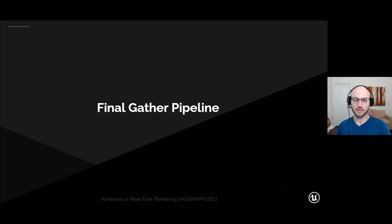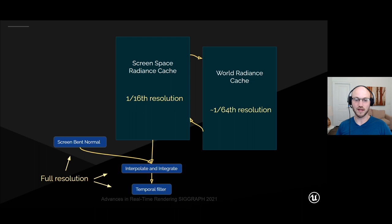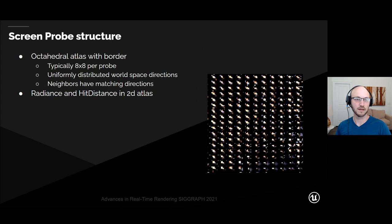Now I'm going to talk about our final gather pipeline. The core is the screen-space radiance cache, backed up by the world-space radiance cache. The screen-space radiance cache happens at a lower resolution than the final image, and the world-space radiance cache is at an even lower resolution. Interpolation from the radiance cache and integration are at full resolution, as is the temporal filter. The screen probes are arranged in an atlas, each probe unwrapped using an octahedral layout, usually at 8×8 resolution per probe — 64 traces per probe — giving uniformly distributed world-space directions. Because neighbors share matching directions, finding a matching direction in a neighbor is very fast.